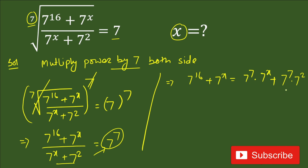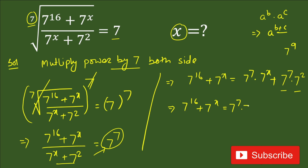Now 7 power 7 times 7 squared is in the form a^b times a^c, where the base is the same. So we add the powers: 7 plus 2 equals 9, giving us 7 power 9. The equation becomes: 7 power 16 plus 7 power x equals 7 power 7 times 7 power x, plus 7 power 9.